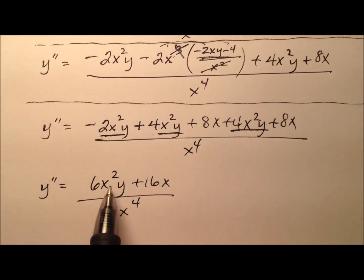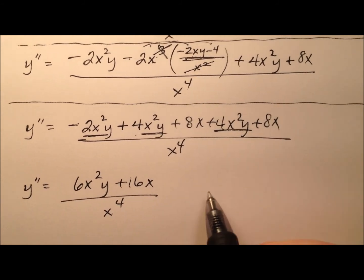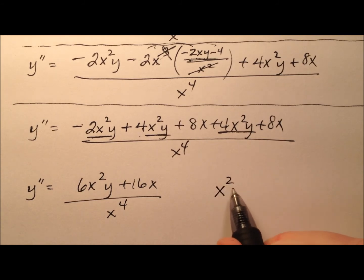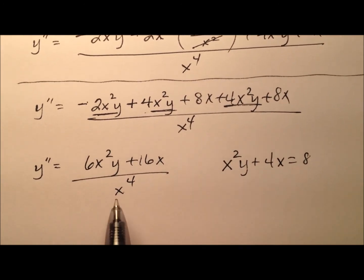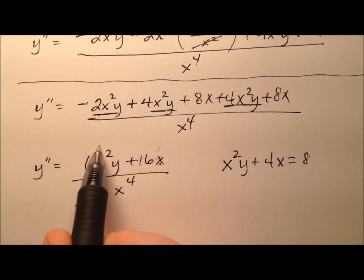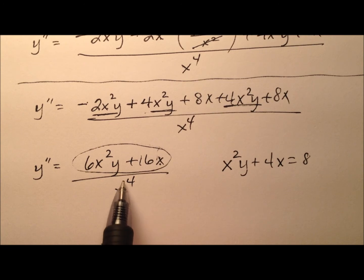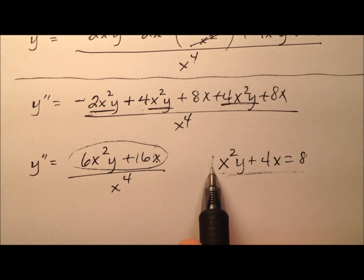Looking at this, I see there's an x in every term that we can pull out. But I want to rewrite the original equation here and show you something we can do. We have x squared y plus 4x equal to 8. It looks like here we have an x squared y with an x. I wonder if we can manipulate the top of this to look a little bit like this so we can simplify. In this case we have 1x squared y and our x term is 4 times that.